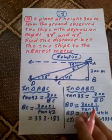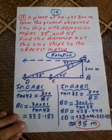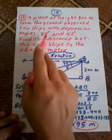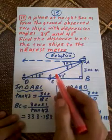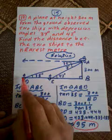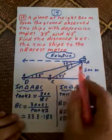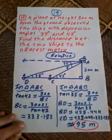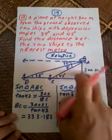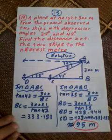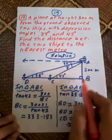A plane at a height of 300 meters observes two ships with depression angles of 37 degrees and 42 degrees. Find the distance between the two ships to the nearest meter. Equivalently, the two ships observe the plane with elevation angles of 37 and 42 degrees.